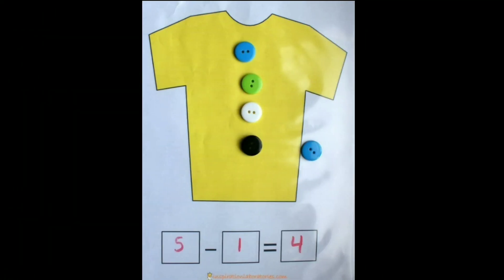See this picture. There are 5 buttons. If we take away 1 button, 5 minus 1 is equal to 4. 4 buttons are left. Like this, we can use different objects to learn subtraction by playing a game.